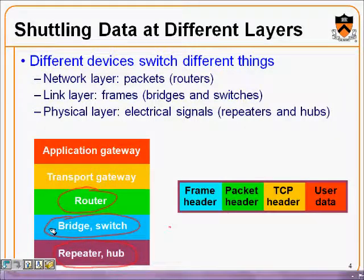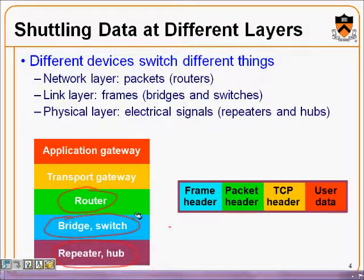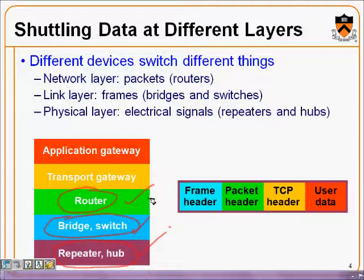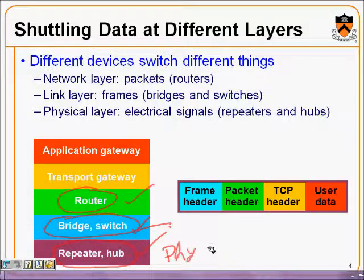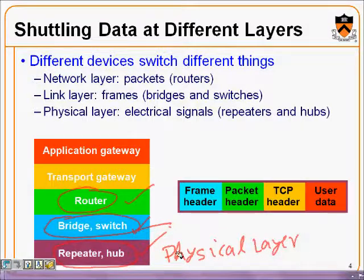In this lecture we will look at routers, bridges, switches, repeaters, and hubs. These are asked very often in interviews. Routers are connecting devices at the network layer. Bridges and switches are connecting devices at the data link layer. Repeaters and hubs are interconnecting devices at the physical layer.